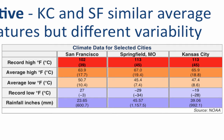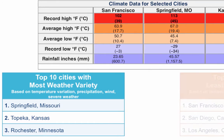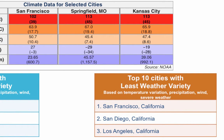I have also included Springfield, Missouri in this table, about three hours south of Kansas City. The average high and average low temperatures are still similar to San Francisco and Kansas City, but Springfield, Missouri has the most weather variety in the nation based on temperature variation, precipitation, wind, and severe weather. Number two in weather variety is Topeka, Kansas, about two hours west of Kansas City. San Francisco, on the other hand, is the top city with the least weather variety. The temperature and climate is very consistent in San Francisco.